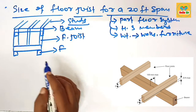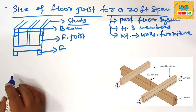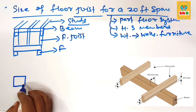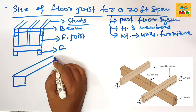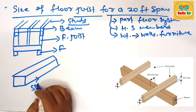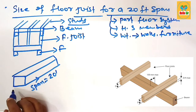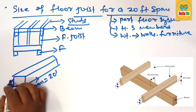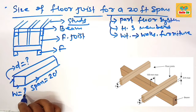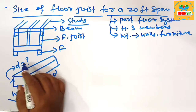Now let's make a diagram to understand the dimensions for the floor joist. This is the span length of the floor joist, which is given as 20 feet. This is the width section and this is the depth section. You have to calculate the width and depth section of the floor joist needed for a 20-foot span.